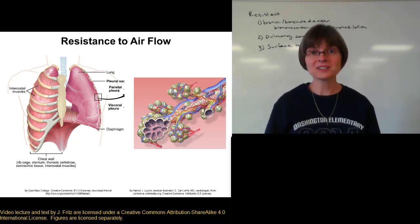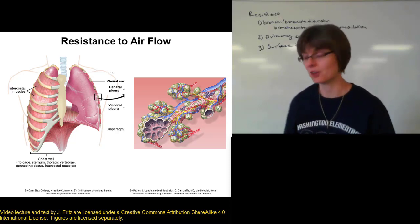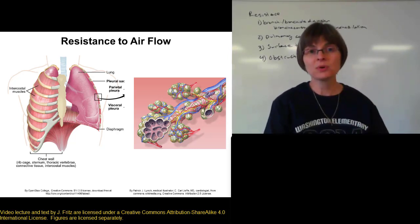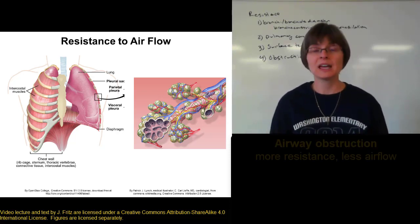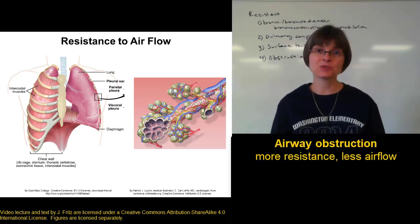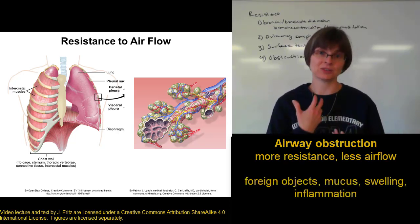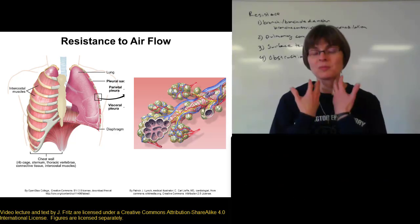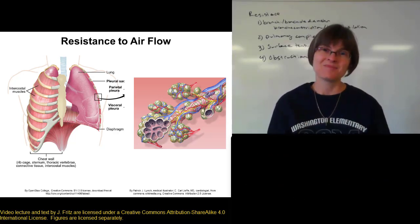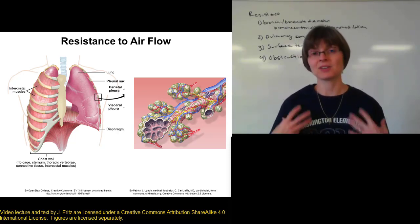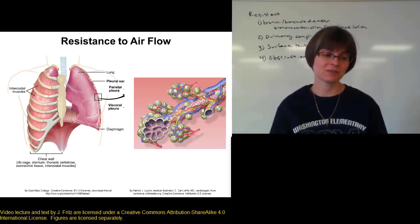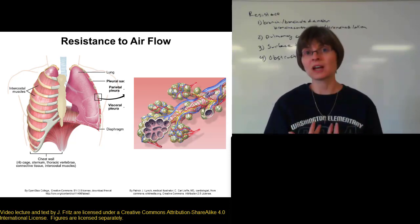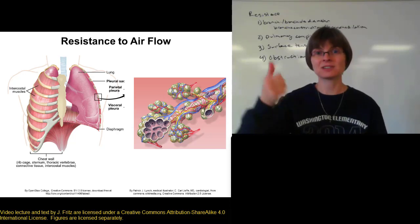One last important factor for resistance is obstruction of air flow. Anything that obstructs the flow of air through the bronchial tree — through the trachea, bronchi, and bronchioles — increases resistance. This ranges from choking on a hard candy, which can block the trachea and cause dramatic resistance and reduced air flow, to mucus buildup in the lungs, as seen in people with cystic fibrosis. Inflammation and swelling along the airways also obstruct them, causing higher resistance and lower air flow.